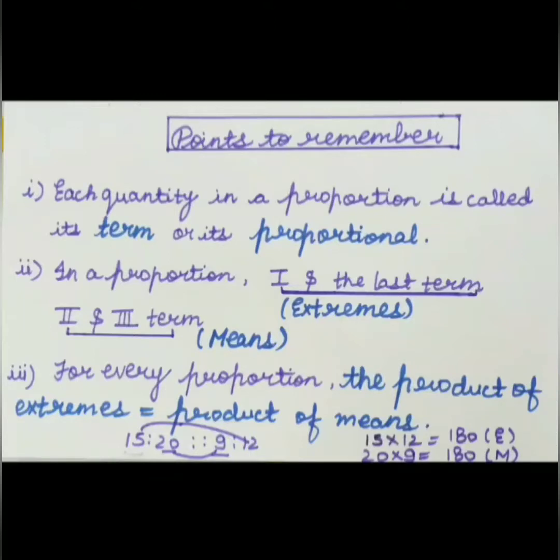And the second and the third one will give you the mean, 20×9 equals 180. Both are giving you the same value, so the product of extremes is equal to the product of means.